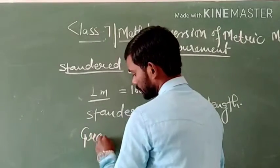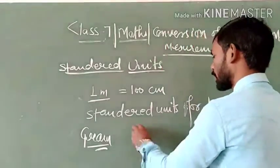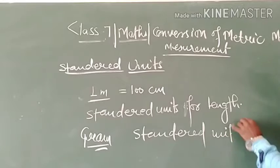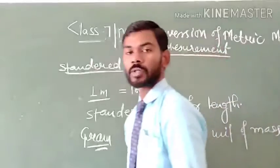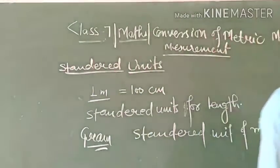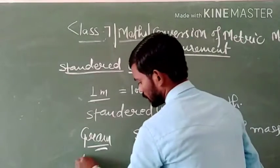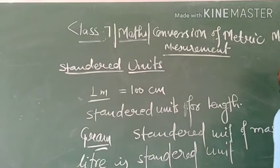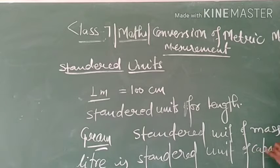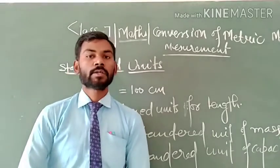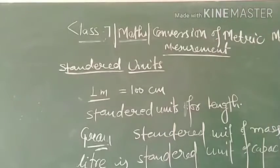Similarly, gram is the standard unit of mass — we use grams to measure weight or mass. Similarly, litre is the standard unit of capacity. So these are some standard units that are the same for all, and hence they are called standard units.